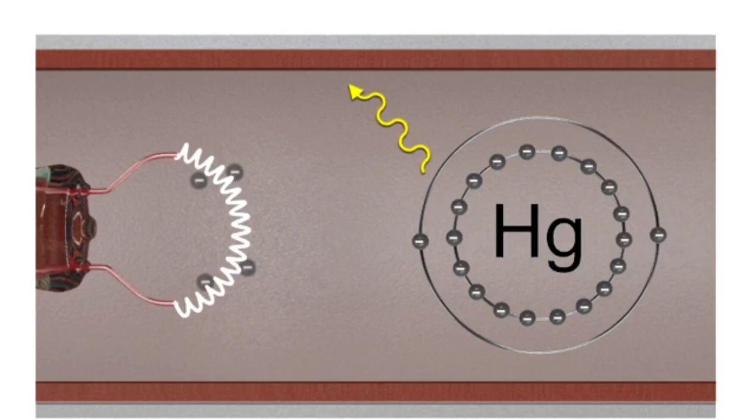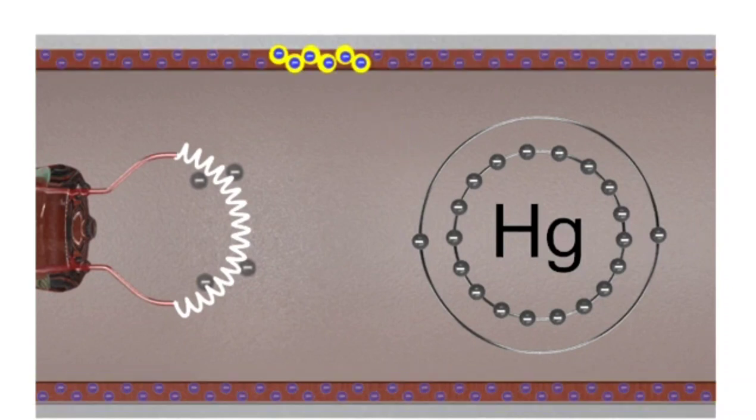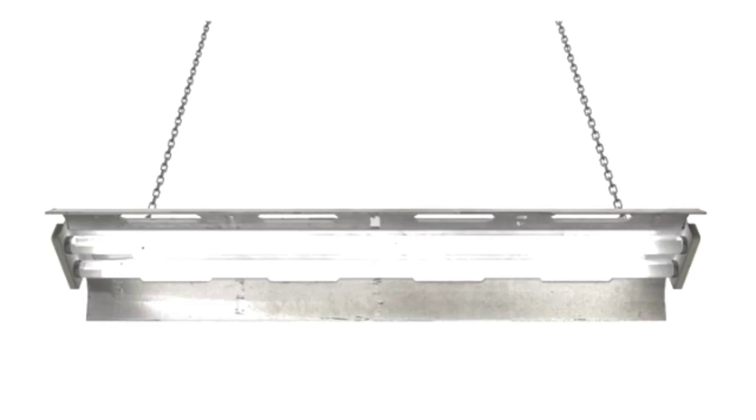This photon is then absorbed by the electrons of the phosphor powder lining the tube, again exciting electrons in the process. This excitation is followed in turn by de-excitation and the release of a low-frequency photon. The photons from all these reactions combine to produce the glow of white light characteristic of fluorescent bulbs.